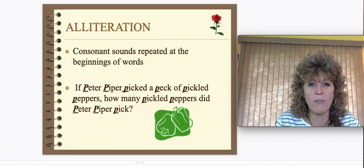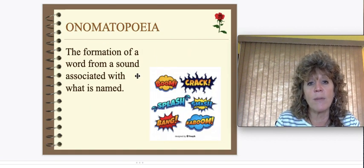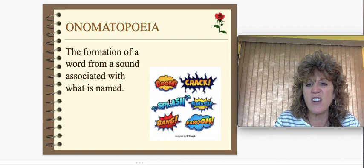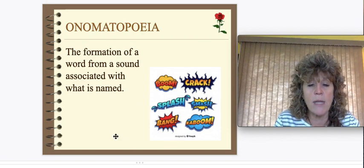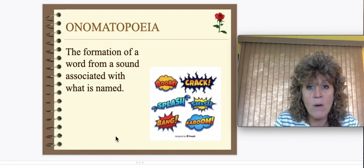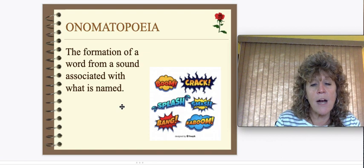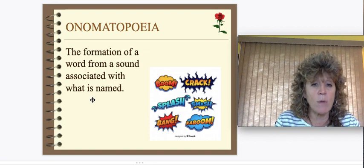Alliteration we already talked about — I won't review that again, but it was something we discussed last week. Onomatopoeia is the formation of a word from a sound associated with what it names. Great examples include animal sounds like moo, meow, or woof. All those sounds are onomatopoeia because they sound exactly like they're spelled.